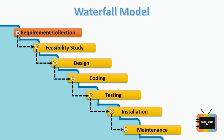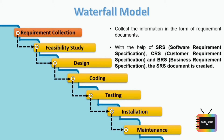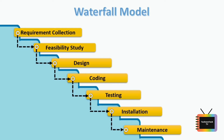The first stage of the waterfall model is requirement collection, where a business analyst will collect all the information and business needs of the customer in the form of requirement documents — such as SRS, CRS, and BRS. The business analyst collects all the information and creates a final SRS document. The document should be clear, easy to understand, and all requirements should be properly listed.